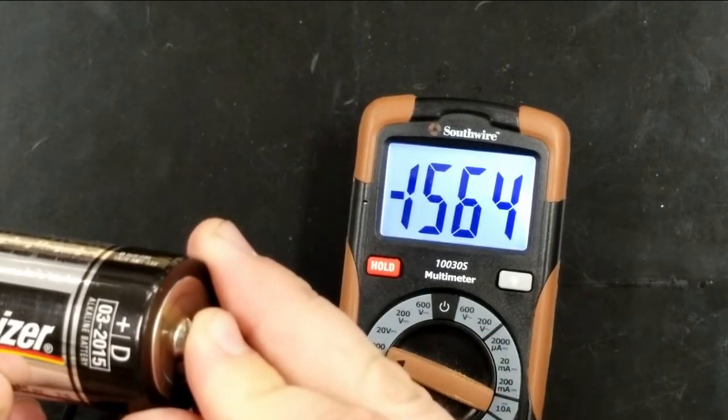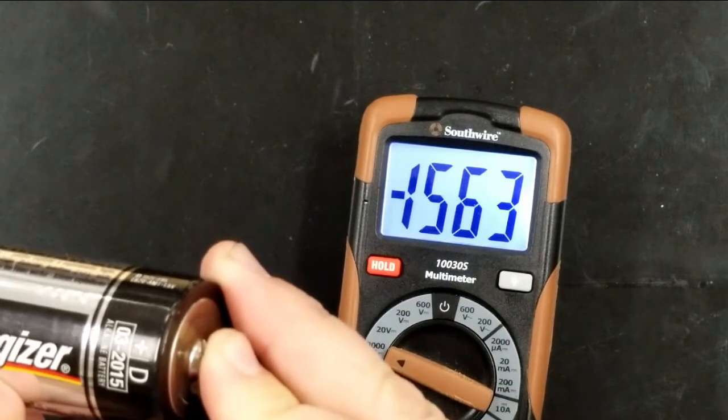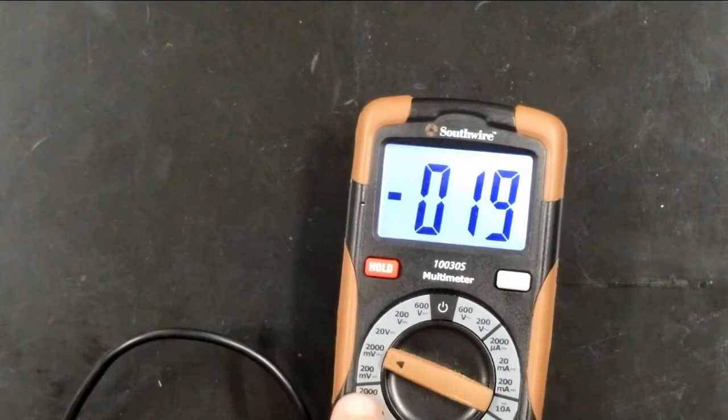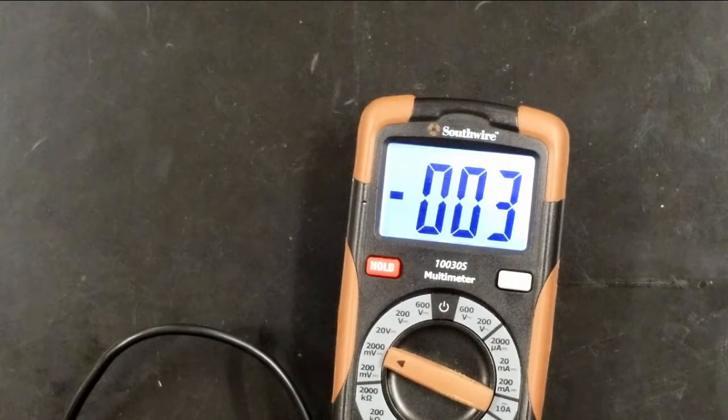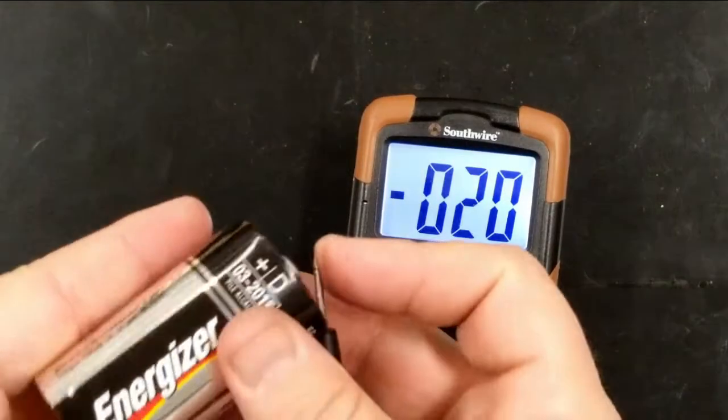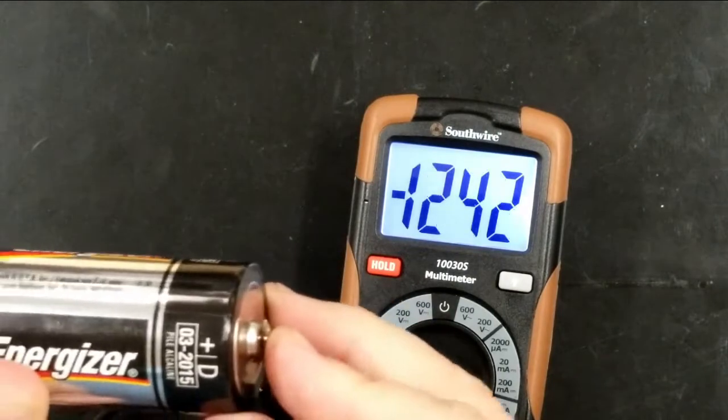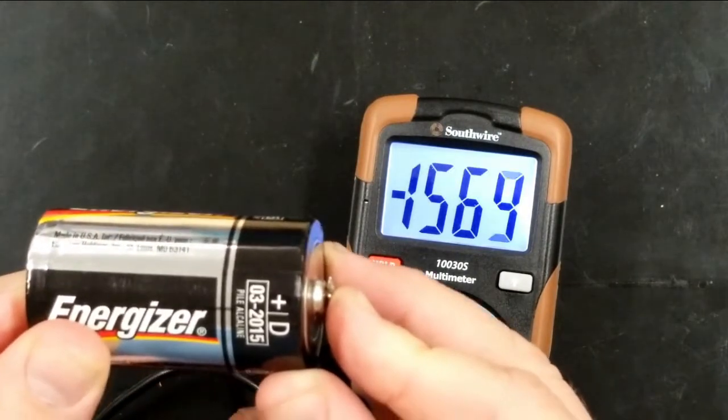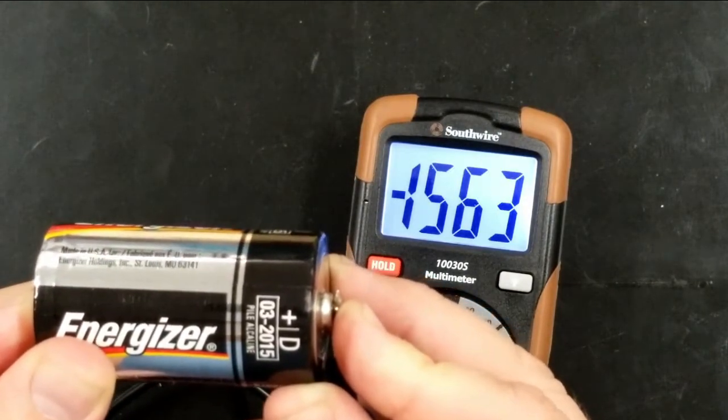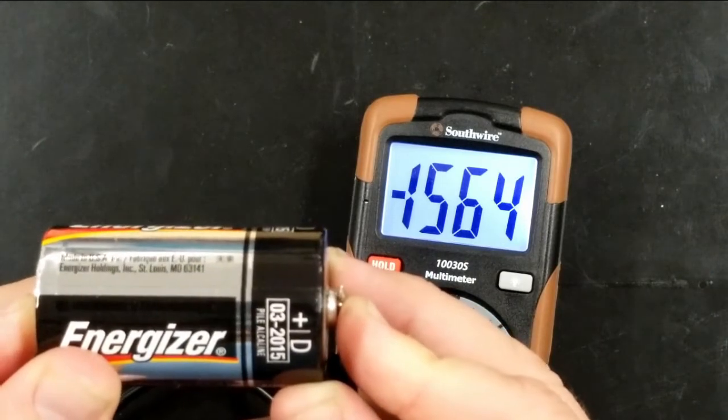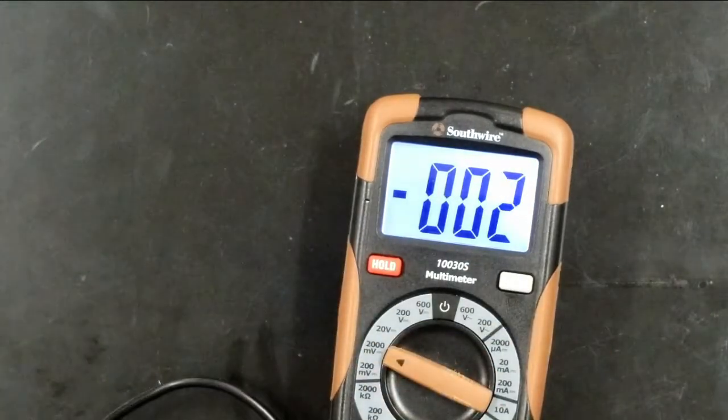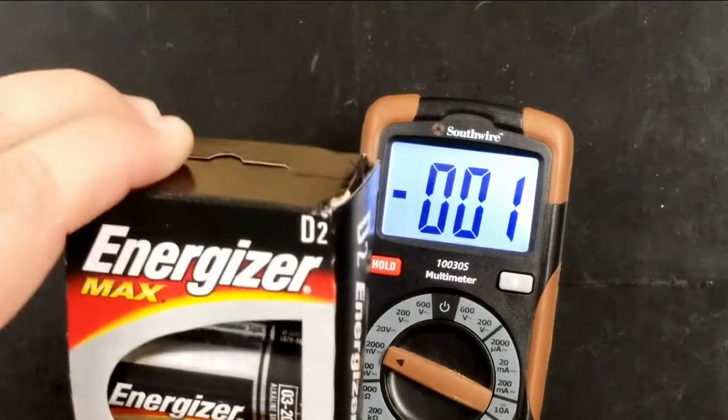You'll notice it reads 1,560 millivolts. So remember that it's on the millivolt setting, so I've got to just remember to convert that to volts. So 1,500 millivolts would be the equivalent of 1.5 volts, which is what the battery says it should be. It's a little bit more than 1.5 volts because this is a brand new battery. Like I literally took these out of the box just a few minutes ago.